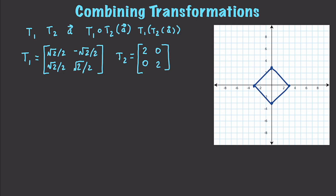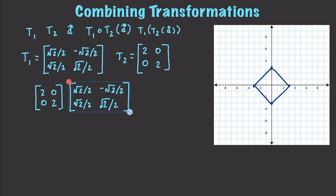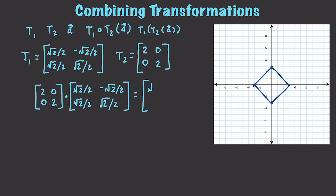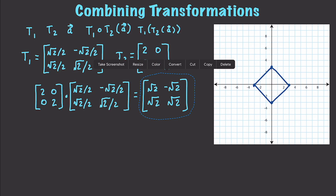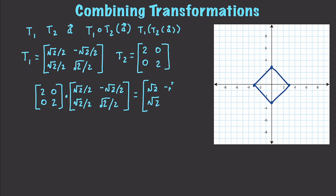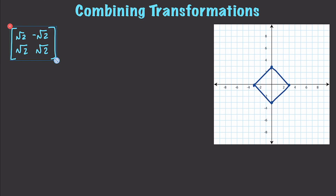To combine them, we simply multiply the two matrices: [[2,0],[0,2]] times the rotation matrix. This works out to [[√2, -√2], [√2, √2]]. We can then take this combined transformation matrix and multiply it by each of our vectors to get the resultant transformed vectors.